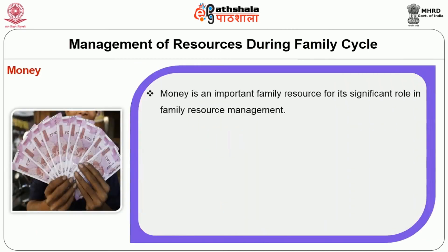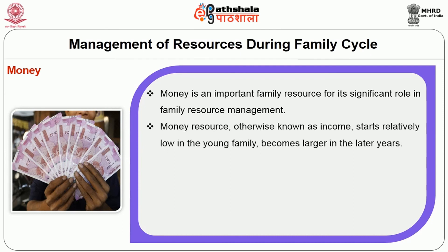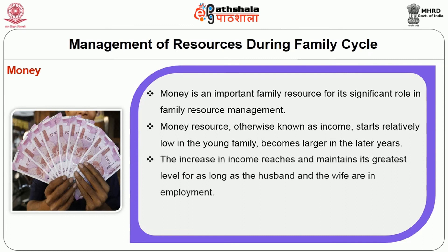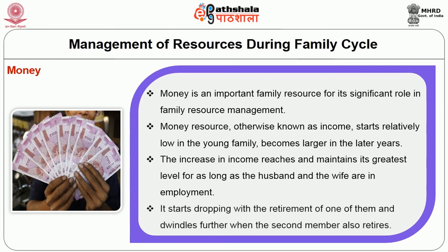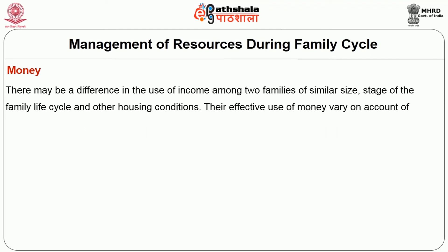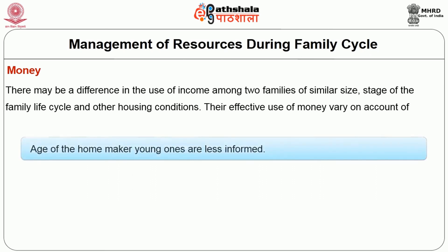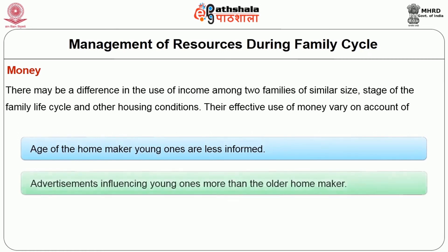The first resource is money. Money is an important family resource for its significant role in family resource management. Money resource, otherwise known as income, starts relatively low in the young family and is larger in the later years. The increase in income reaches and maintains its greatest level for as long as the husband and wife are in employment. It starts dropping with the retirement of one of them and further when the second member also retires. The effective use of money varies on account of the age of homemakers — young ones are less informed — advertisements influencing young ones more than older homemakers, and knowledge and experience in handling family finances.